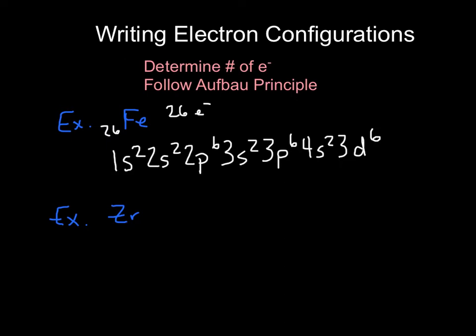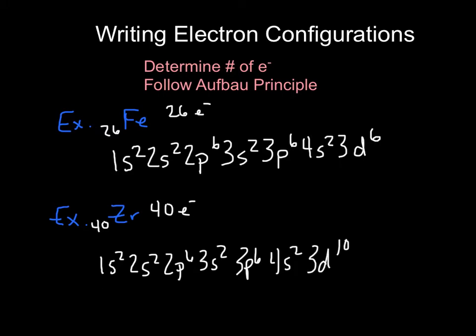For zirconium, I'm going to do the same thing. Looking at the periodic table, it is atomic number 40. This has no charge on it, so that means there are 40 electrons. I'm just going to start placing them until I hit my 40. 1s², 2s², 2p⁶, 3s², 3p⁶, 4s², 3d. Now I need all 10 of those.